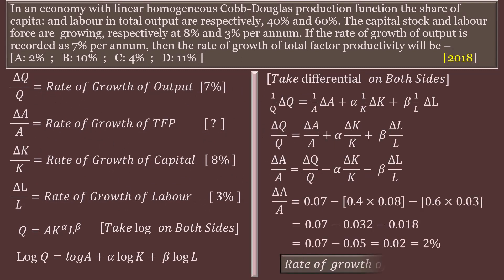As a first step, let us take the log on both sides of the Cobb-Douglas production function: log Q equals log A plus alpha log K plus beta log L. Now take the differential on both sides. The differential of log Q is (1/Q) delta Q. The differential of log A is (1/A) delta A, plus alpha times (1/K) delta K, plus beta times (1/L) delta L. On simplifying, we get: delta Q by Q equals delta A by A plus alpha times delta K by K plus beta times delta L by L.